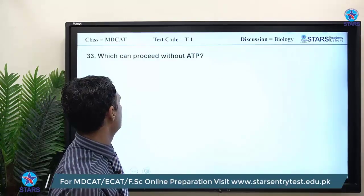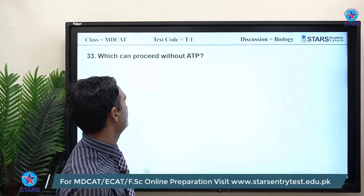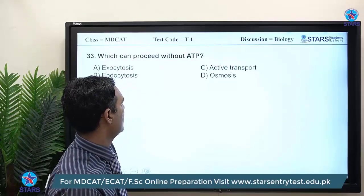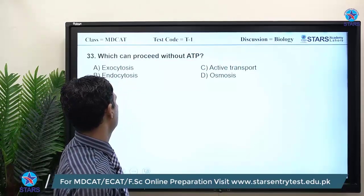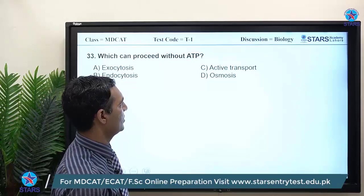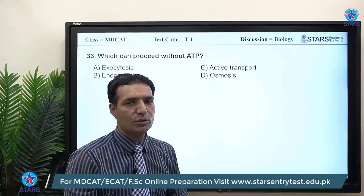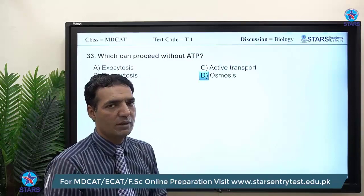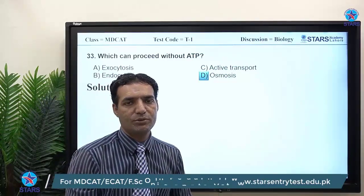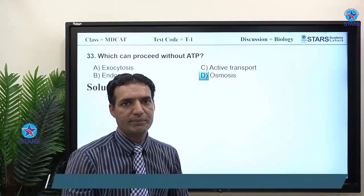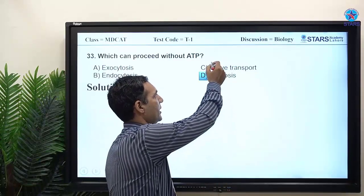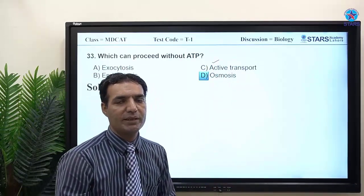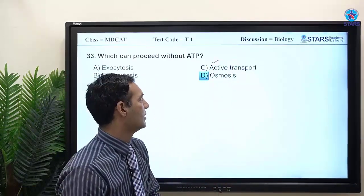MCQ 33: which process can proceed without ATP? Options are exocytosis, endocytosis, active transport, and osmosis. The best answer is osmosis, because osmosis never requires ATP. Active transport always requires ATP, and endocytosis/exocytosis can also require ATP.